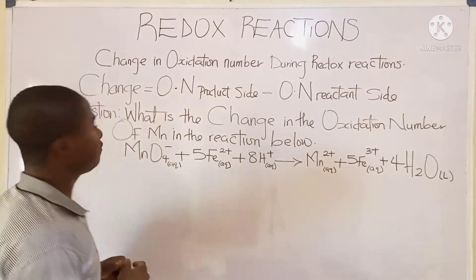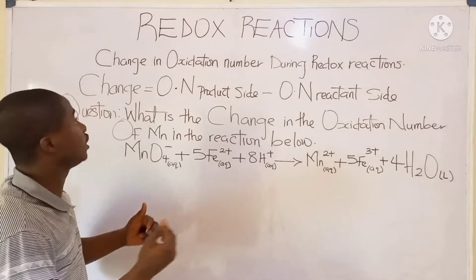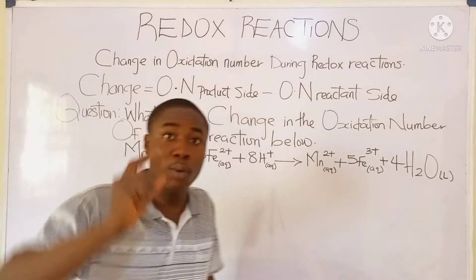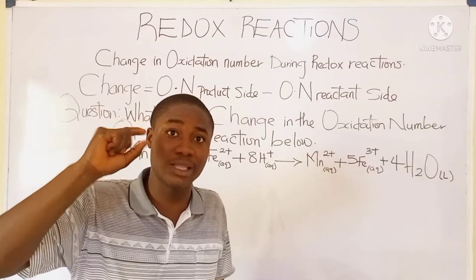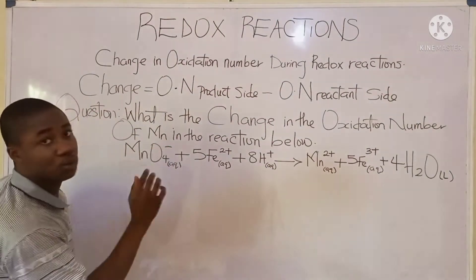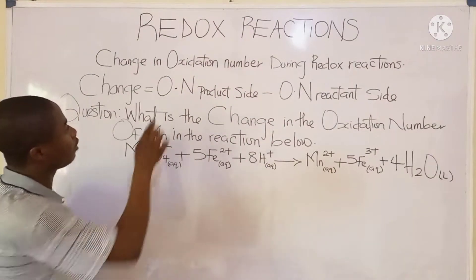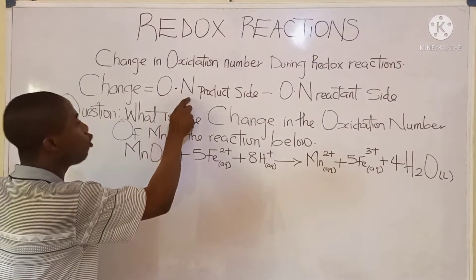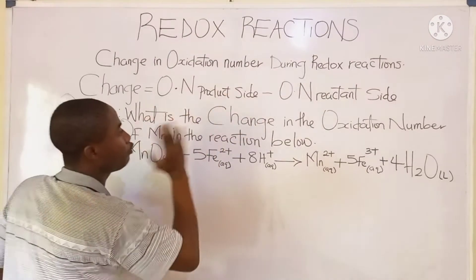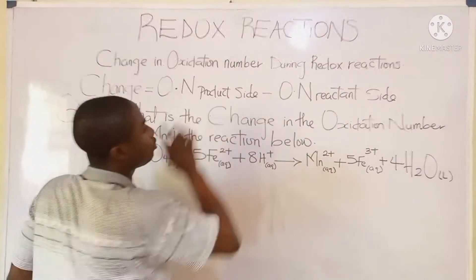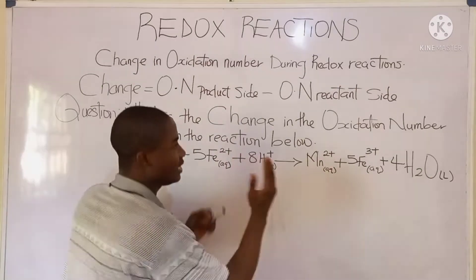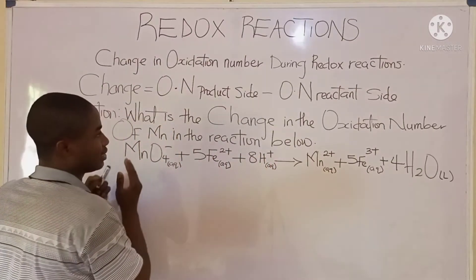To calculate the change in the oxidation number of a particular element during a redox reaction, we simply use the formula: oxidation number of the element in the product side minus the oxidation number of the element in the reactant side.